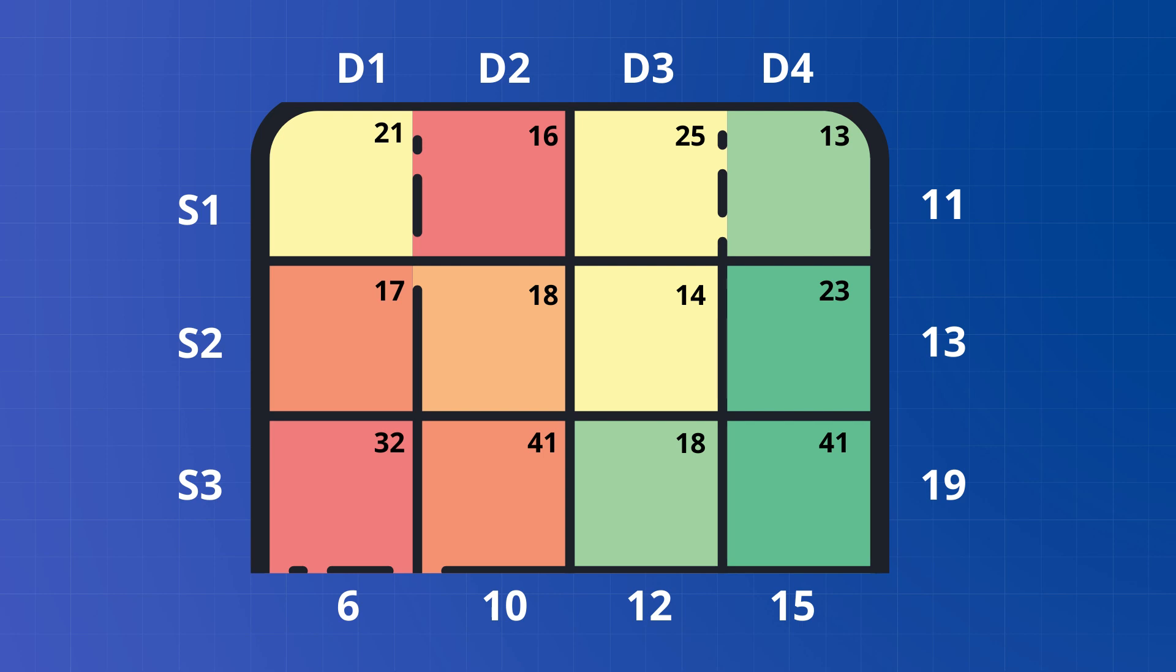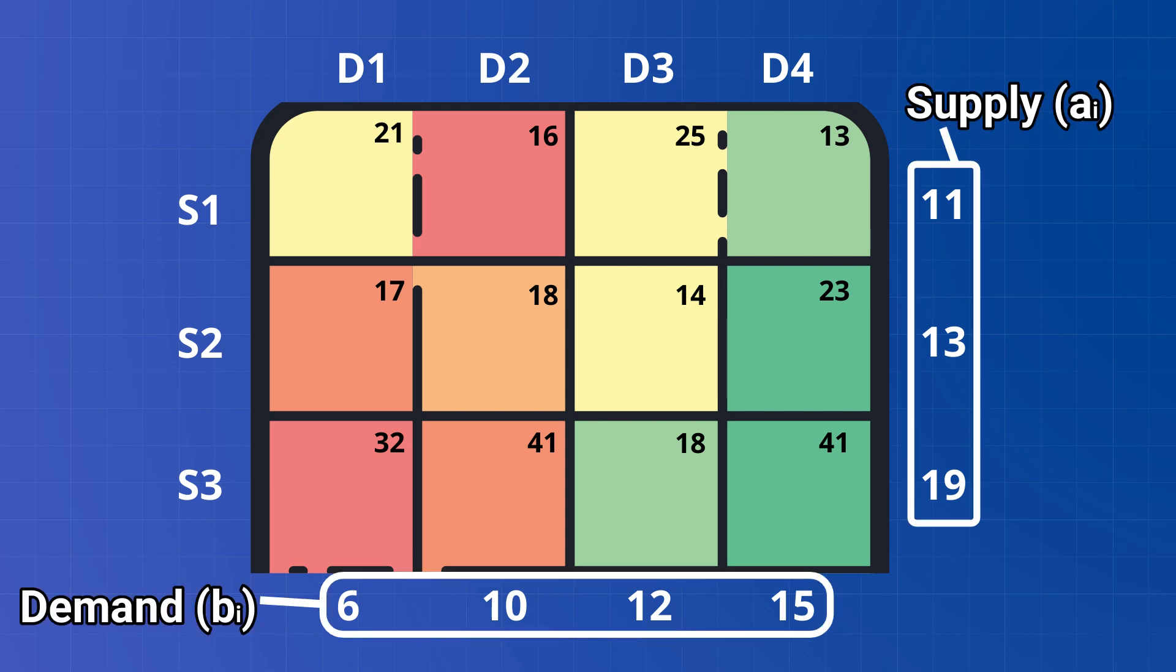Here let's first check if demand is equal to supply or not. So for that we will add all the ai and bi values, or in other words we need to find if summation of bi is equal to summation of ai or not. Now adding all the ai values we have 11 plus 13 plus 19 equals 43, and all bi values as 6 plus 10 plus 12 plus 15. This is also coming up to be 43.